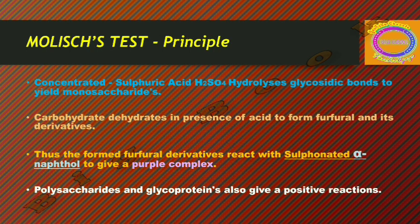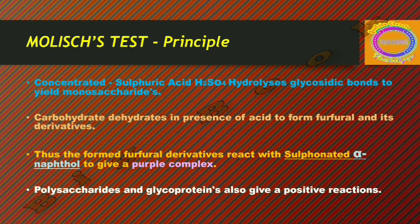The principle of the Molisch test is that concentrated sulfuric acid is used to hydrolyze the glycosidic bonds of carbohydrates — that is, the monosaccharides — where the carbohydrate dehydrates in the presence of this acid to form furfural and its derivatives. Furfural is an aldehyde compound.